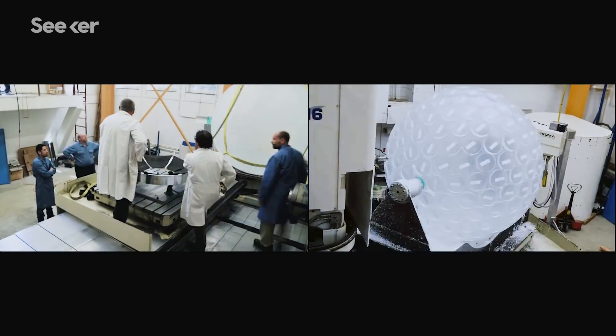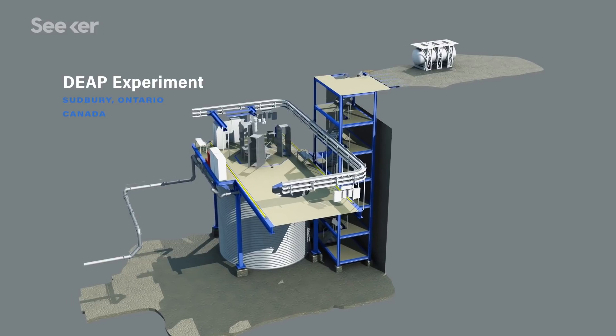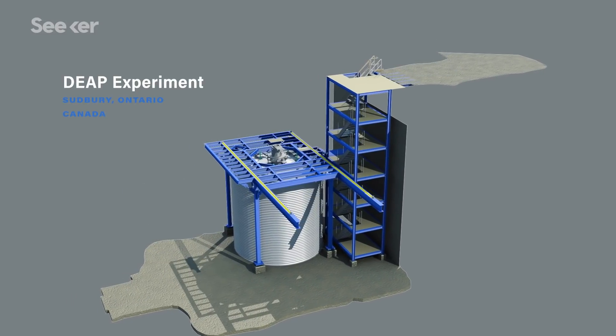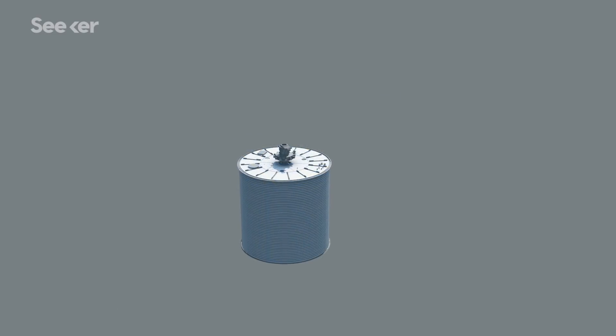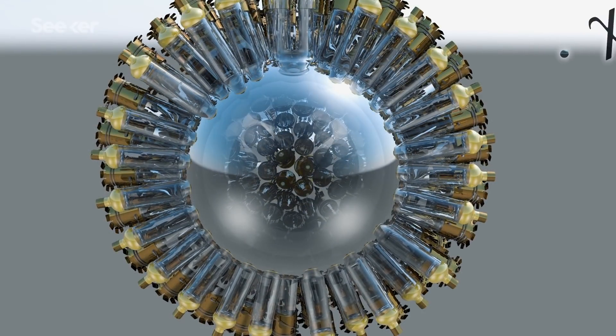I work on the DEAP experiment, and we use a detector which has three and a half tons of argon and is located a mile underground in Sudbury, Ontario, Canada. And what we're looking for is some evidence that a dark matter particle struck an argon atom, and then that argon atom deposited the energy in the detector, and that produces a flash of light.